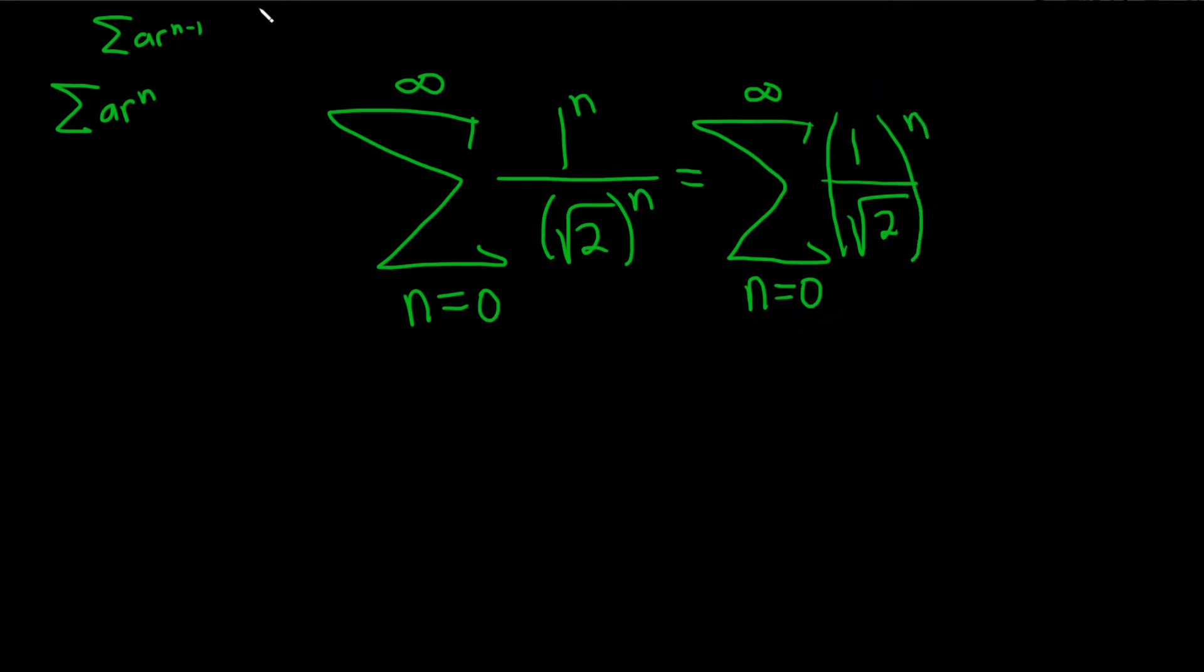And so now we can identify r. You see r here is 1 over the square root of 2. This has a name, this is called the common ratio.